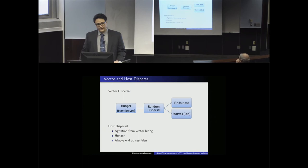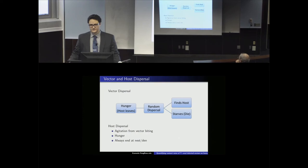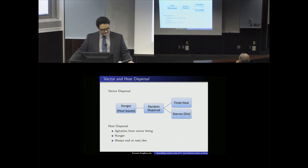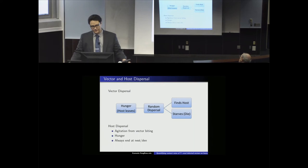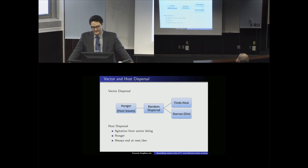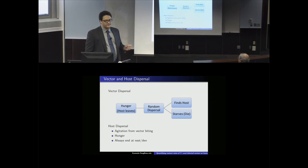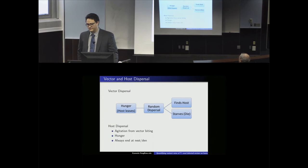Hosts disperse due to agitation: if the number of bites exceeds a threshold, the host leaves the den or nest. Juvenile vector bites are weighted as less painful than adult vector bites. Hosts also disperse when foraging for food and sometimes don't return to the same den two nights in a row. However, at the end of each night, hosts are always found at a den or nest — a raccoon is always sheltered safely, not sleeping in the open.